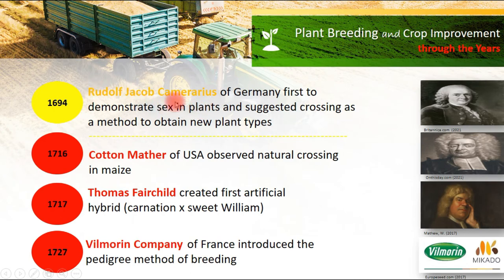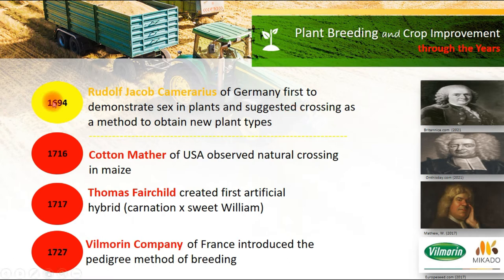Rudolf Jacob Camerarius, from Germany, was the first to demonstrate sex in plants and suggested crossing as a method to obtain new plant types. This occurred in 1694.